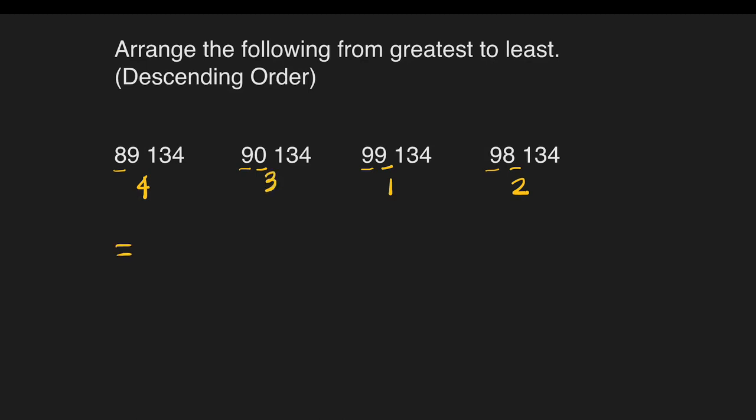Let's rewrite them from the greatest value to the least value. So in this case, we have 99,134, the next is 98,134, next is 90,134, and the last, 89,134. There you go. That's our final answer.